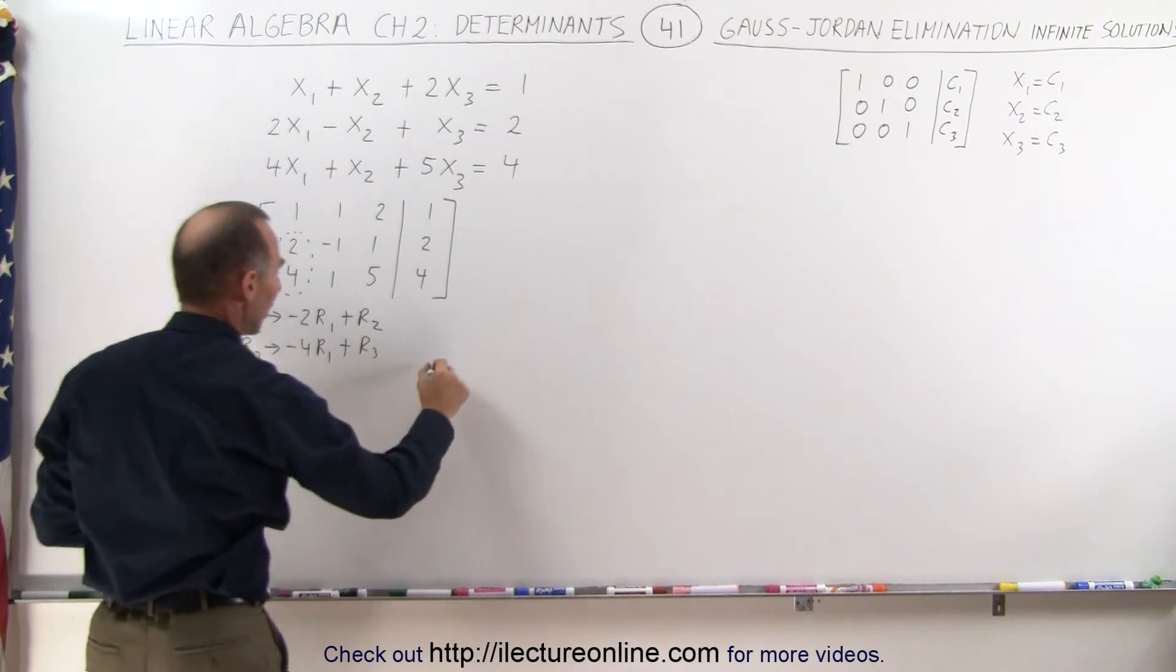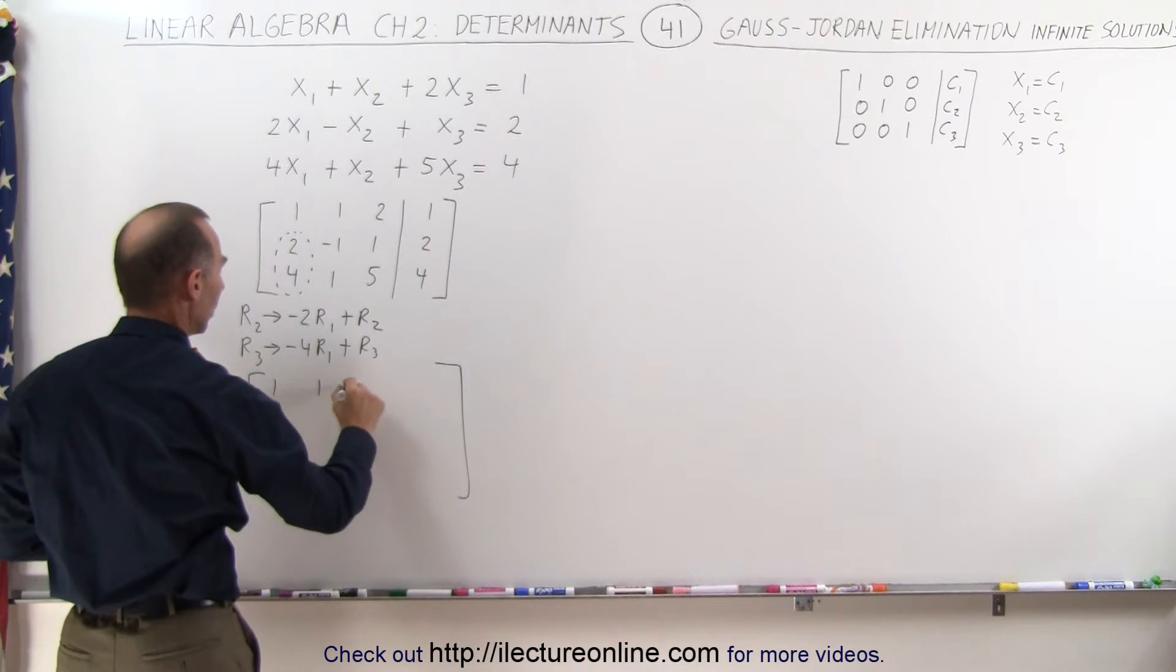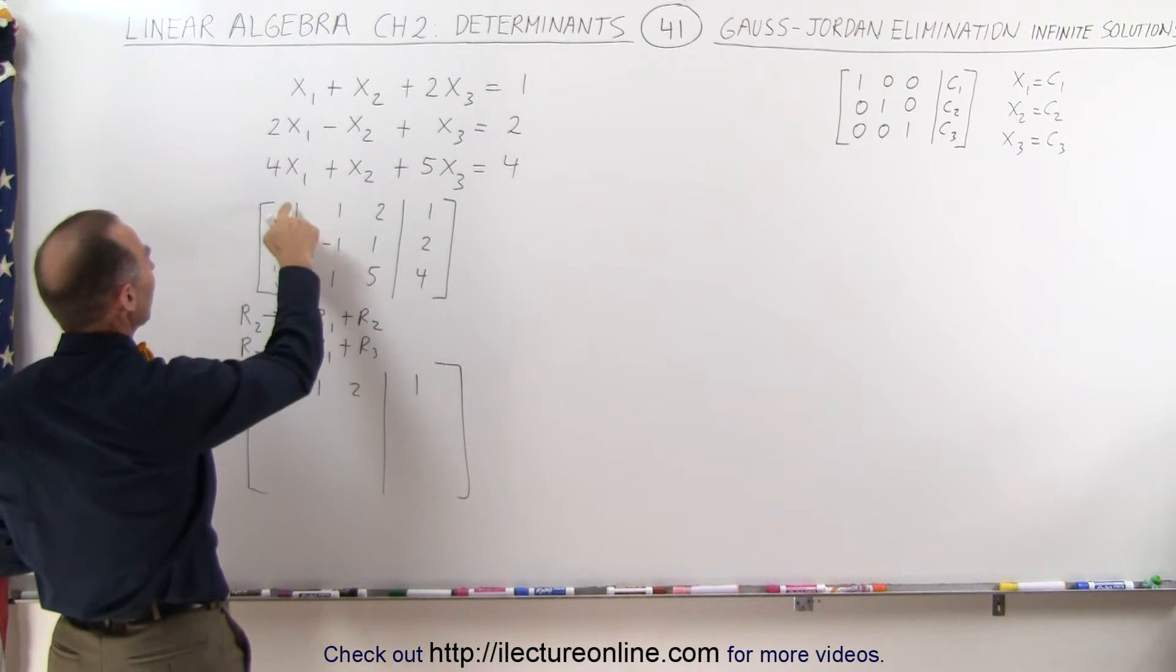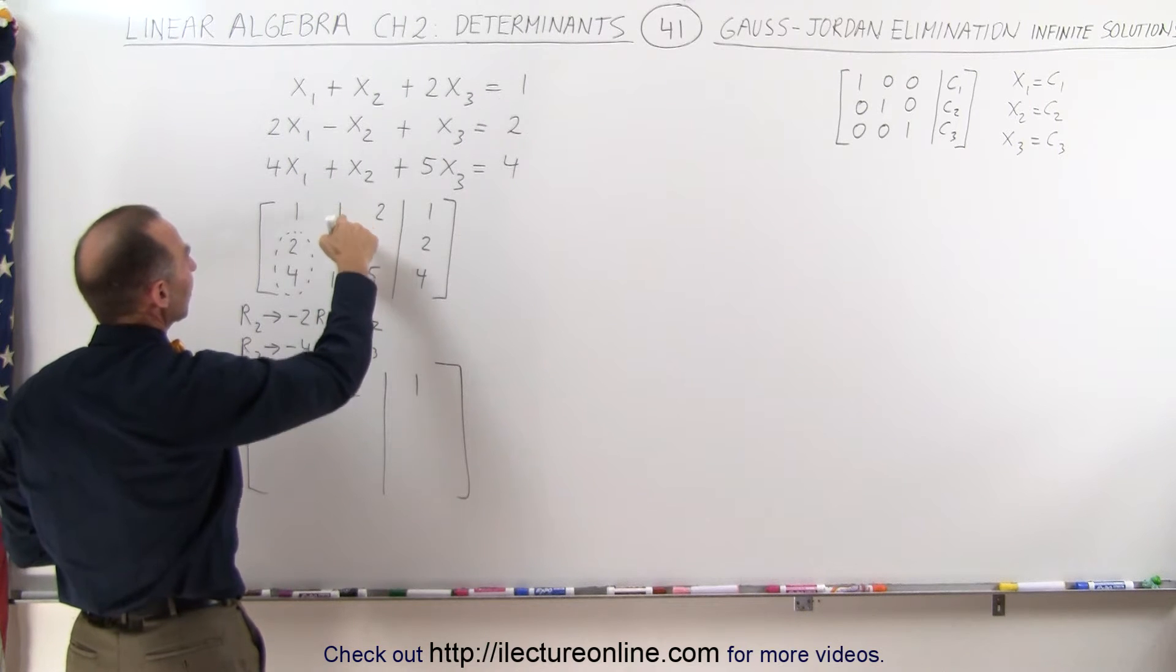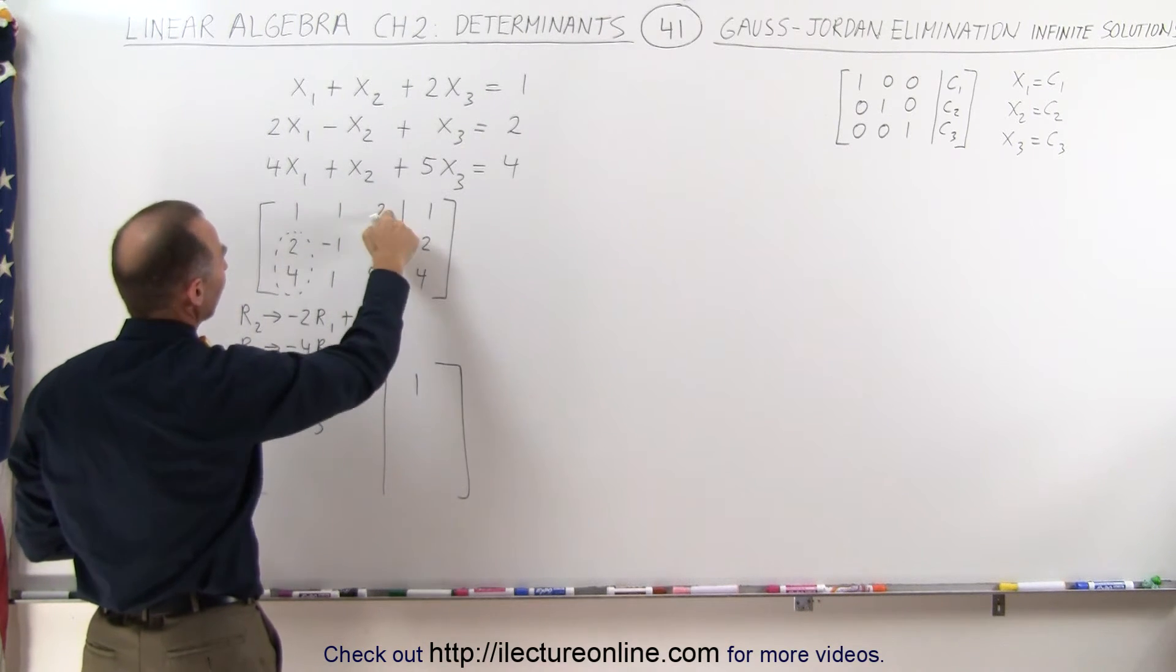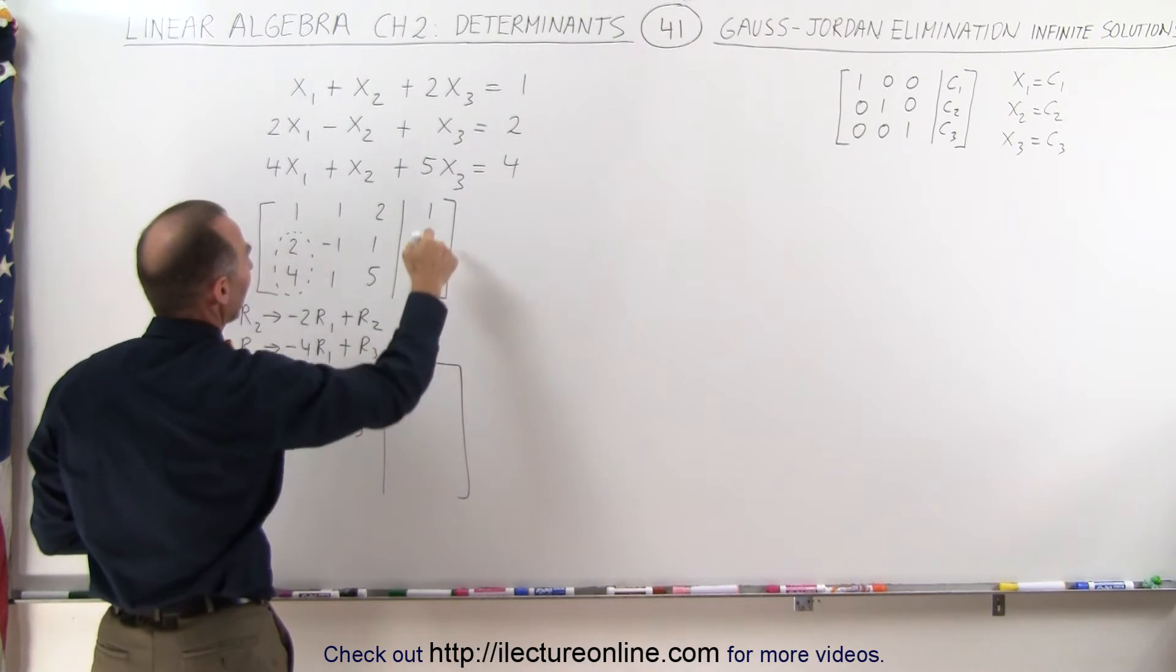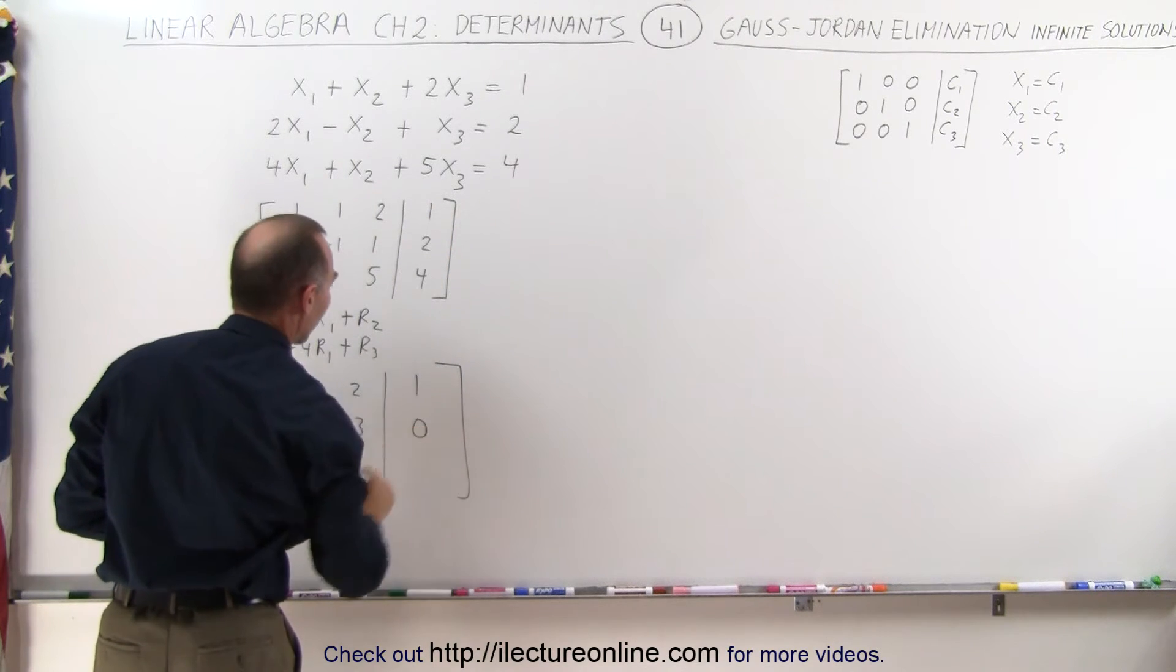When we do that, we get the following matrix. The first row doesn't change: 1, 1, 2, and this is still 1. Now the second row, we have negative 2 times 1 added to 2, that becomes 0. Negative 2 times 1 is negative 2, added to negative 3, negative 1 is negative 3. Negative 2 times 2 is negative 4, added to 1, which is a negative 3. And negative 2 times 1 is a negative 2, added to 2 gives me a 0.